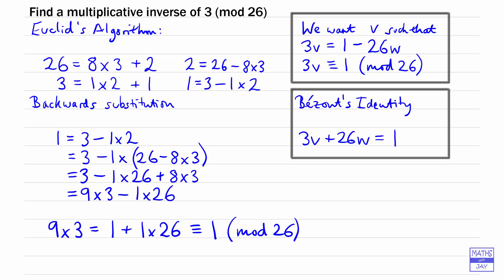So we have found v and w. V is the number we were really looking for, but while we're at it, w equals negative 1. And we have found that 9 is a multiplicative inverse, not the multiplicative inverse.